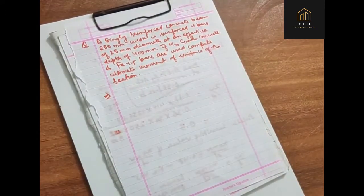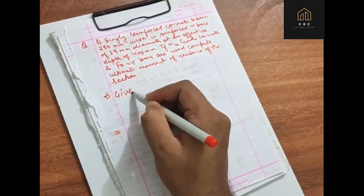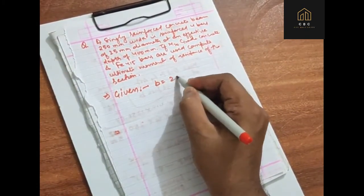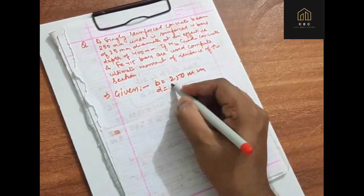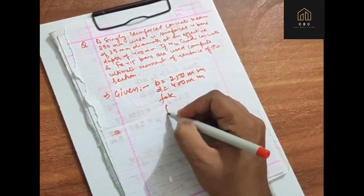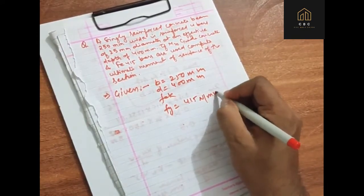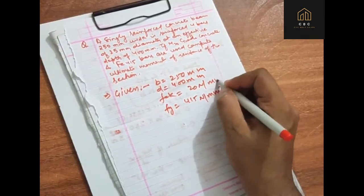Now let's see what is given. The given is B equals 250 mm, D equals 400 mm, FCK equals 20 newton per mm square, and FY equals 415 newton per mm square.